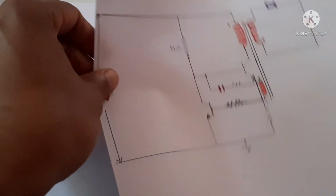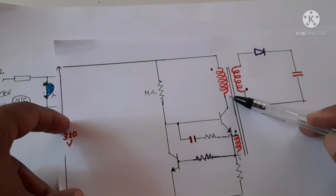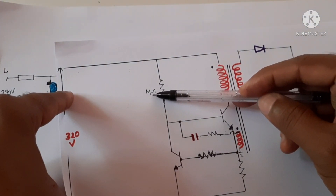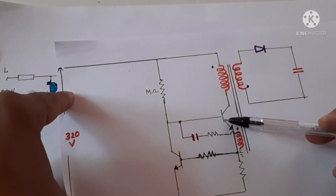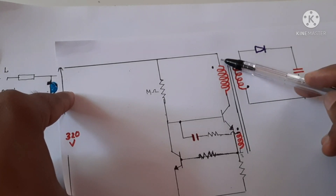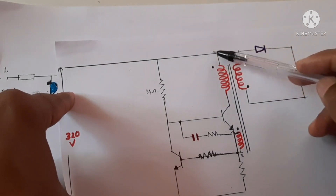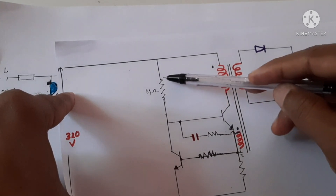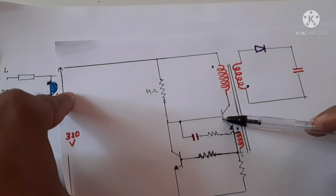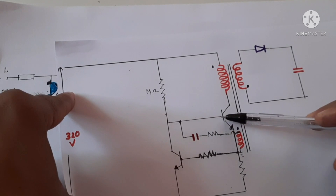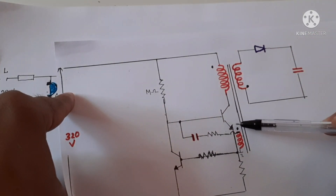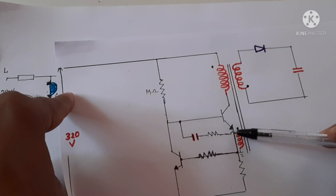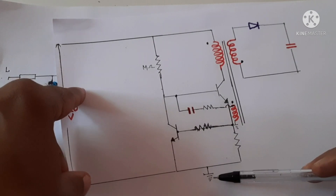This 320 volt is applied across the capacitor and to the primary of the transformer. One end of the primary is connected through a high-value resistor — around 1 kilo-ohm to 1 mega-ohm — to the base of a transistor. This point and this point are both at 320 volts, but there will be no current flow through the primary of the transformer unless the transistor is on. To turn the transistor on, a base current is needed.